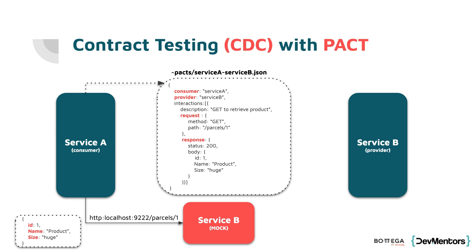Inside the PACT, we have the name of the consumer, the provider, and then a list of interactions. We describe that this is a GET to retrieve a particular product, specify the HTTP GET method and the particular endpoint, and define the response we expect — like a 200 with the shape of the body. The PACT itself is all about consumer-driven testing, so the consumer is always right. This means running the first phase on the consumer side should always succeed, producing this JSON file with the PACT definition.